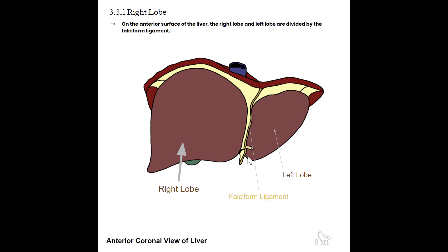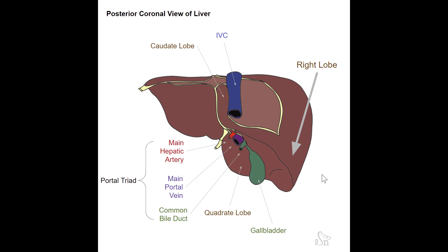On the anterior surface, the falciform ligament divides the right lobe from the left lobe. The right lobe is the largest lobe, typically about six times bigger than the left, and is mostly found in the right hypochondrium. From the posterior view, the right lobe ends at the IVC, the caudate lobe, the porta hepatis, and the gallbladder fossa — anything lateral to the IVC, porta hepatis, and gallbladder fossa is considered the right lobe anatomically.